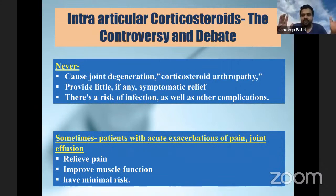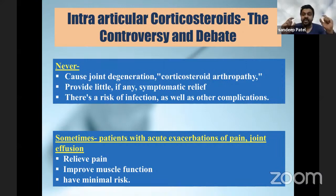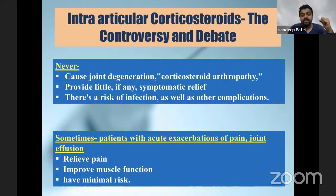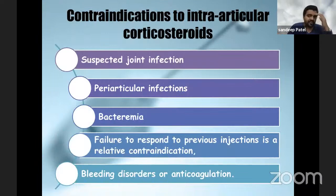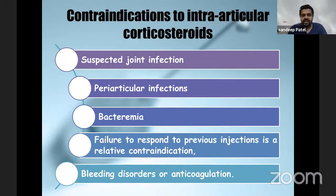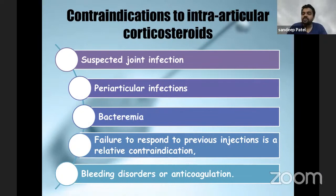On the other hand, we have a group of orthopedicians and literature itself who say there is an indication - sometimes we have to use it for the knee also. And that indication is the acute flares with acute exacerbation of pain and joint effusion, because it can relieve pain, improve muscle function, and actually poses little risk. Now, the real contraindications are: you should never give an injection if you have a suspected infection of a joint, any periarticular infections, overall bacteremia or septic picture, diabetes or other conditions which can predispose. Failure to respond previously is also a contraindication, and bleeding disorders or anticoagulation is also a contraindication.